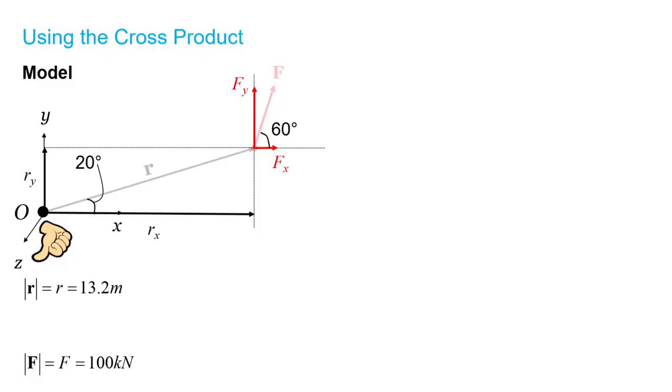The moment of a force is defined vectorially as R cross F, which can be shown here with bold letters as the vector or with the vector notation over top of the variable. Now, it's very important to remember that the order is important for a cross product. So, this is R cross F, and R cross F does not equal F cross R. You have to be very careful with that.